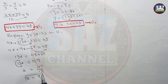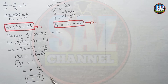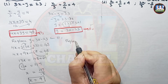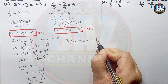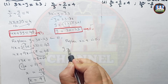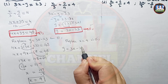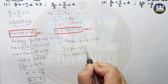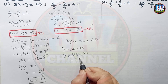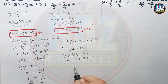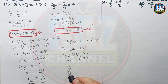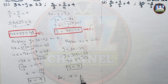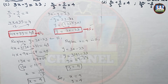To find the second variable, replace x equals 9 in equation 1. Using y equals 3x minus 23: y equals 3 times 9 minus 23, which is 27 minus 23 equals 4. So y equals 4. The solution for this question is x equals 9 and y equals 4.